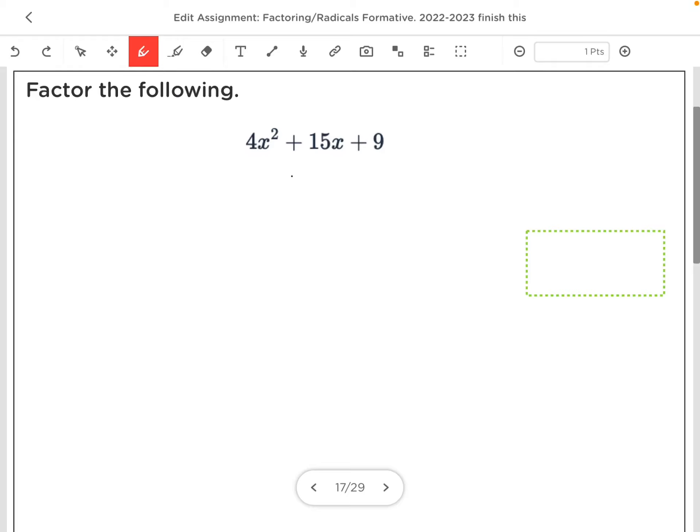We're going to factor this trinomial, and looking at this, I see we have a leading coefficient other than 1. So, I'm going to set my two sets of parentheses, and now realizing that my first two spots here could be 4x and x, or 2x and 2x.